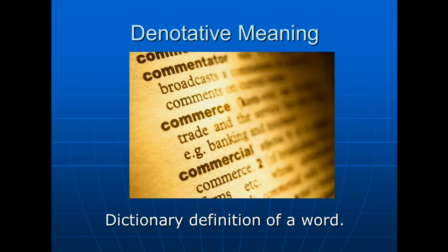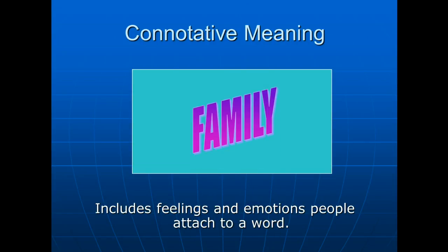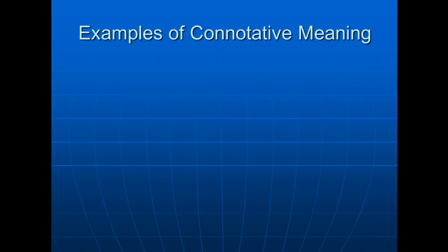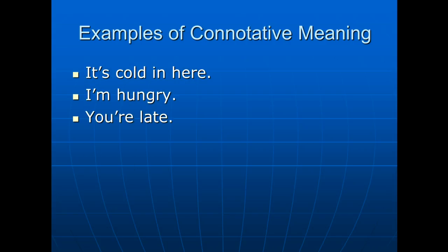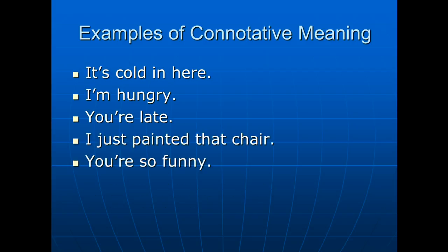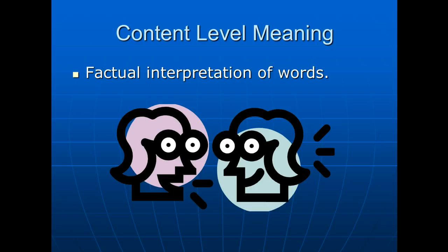The denotative meaning of a word is the dictionary definition. But in real communication, we more often live in the realm of connotative meaning, which includes feelings and emotions we attach to a word, such as 'family.' We can look up that word in a dictionary, but when we speak of family, it has certain feelings attached — for some people very positive, for others very negative. Consider: 'It's cold in here,' 'I'm hungry,' 'You're late,' 'I just painted that chair,' 'You're so funny' — all convey something beyond the surface fact. 'I just painted that chair' is really saying, don't sit in the chair.